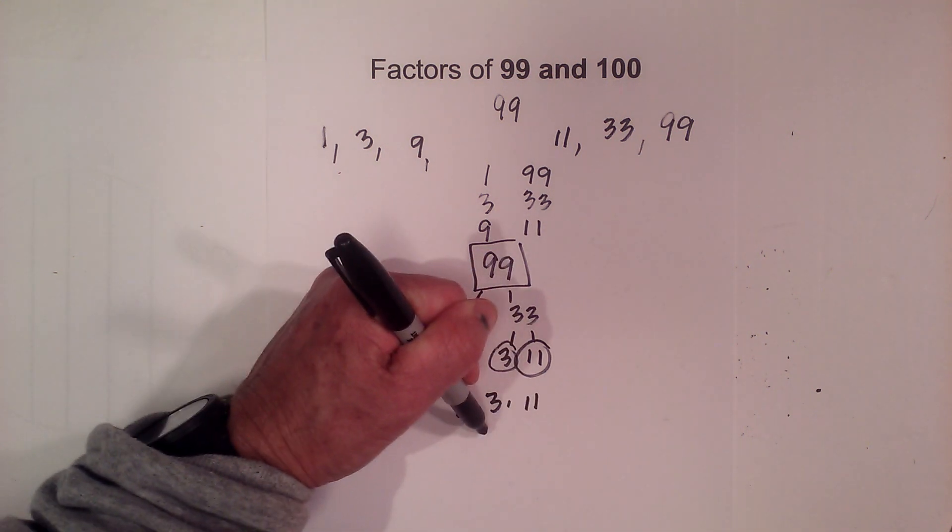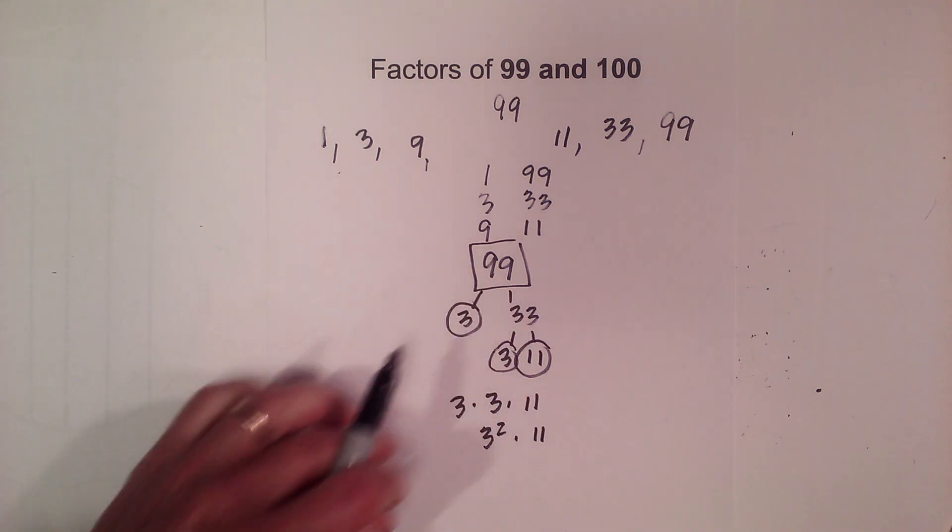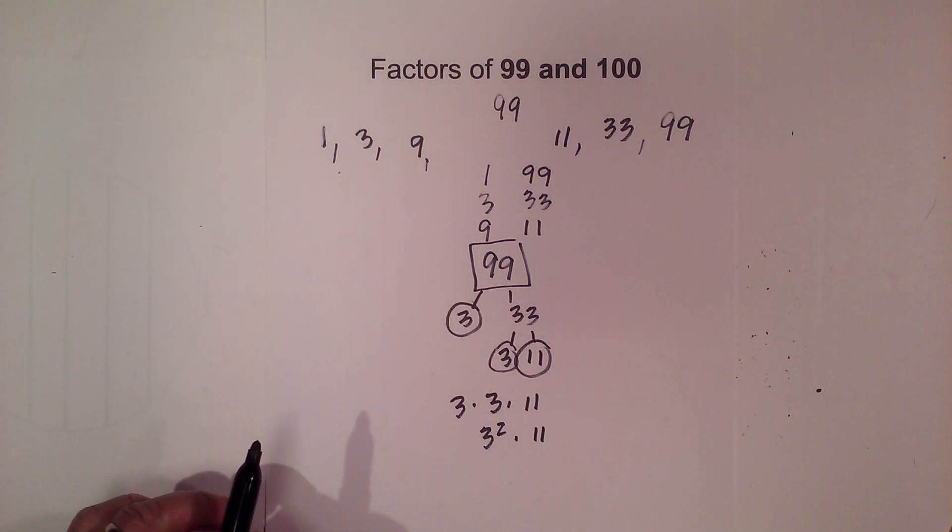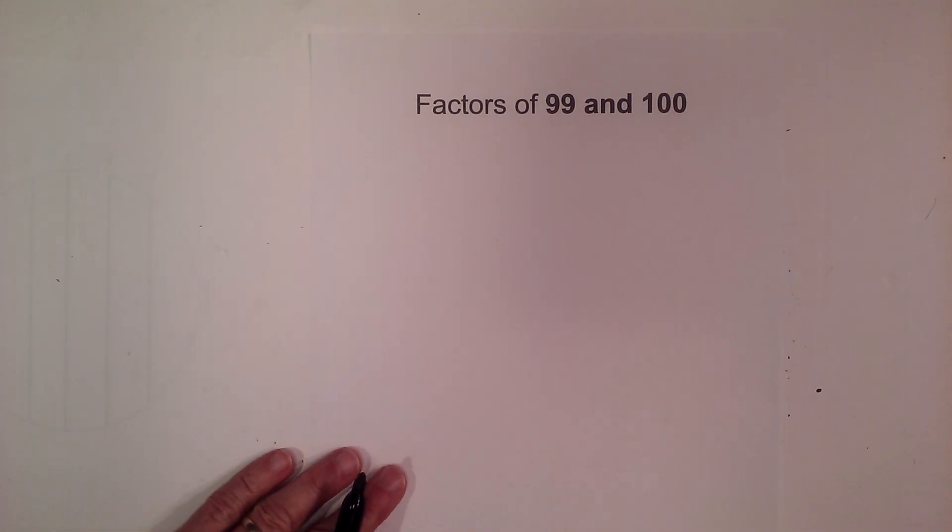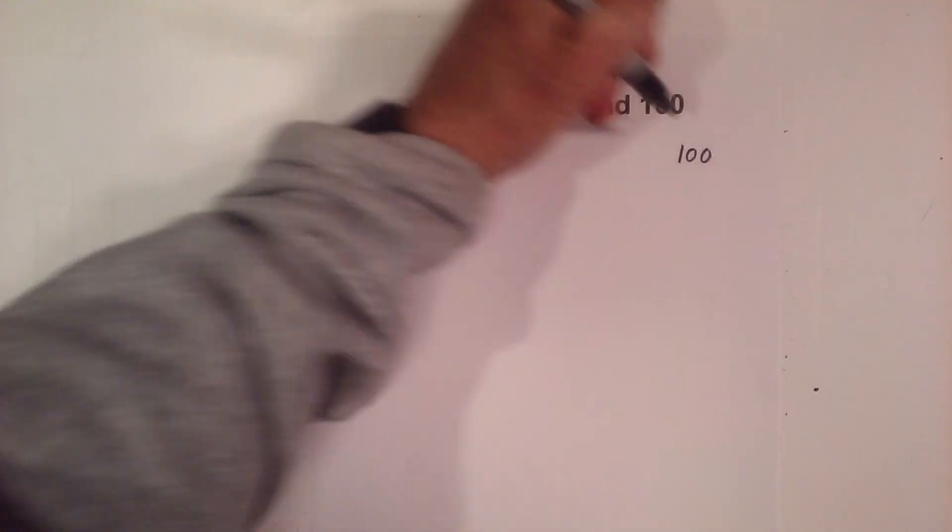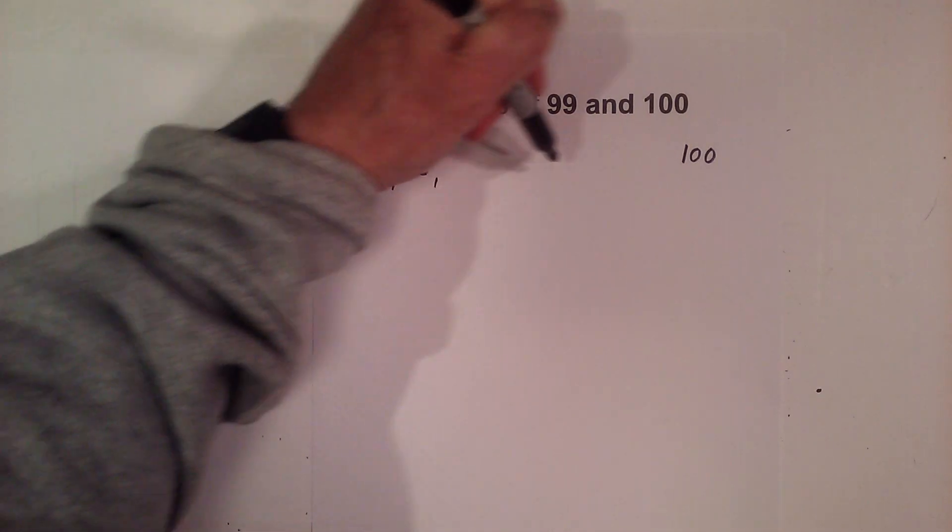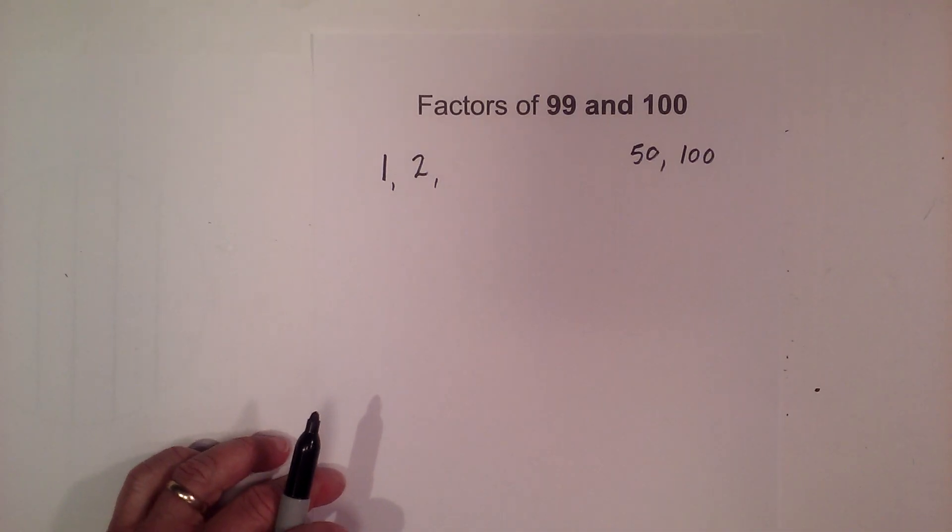Now let's look at 100. 100 is also a composite number so let's start with 1 times 100. It is even so I know 2 goes into it, 2 times 50. Okay then we